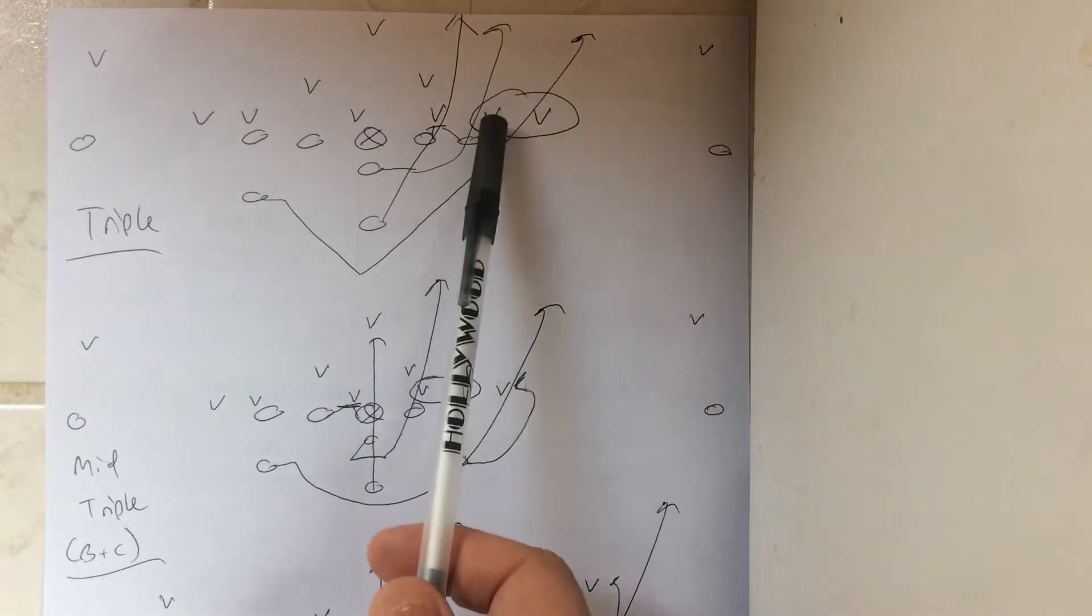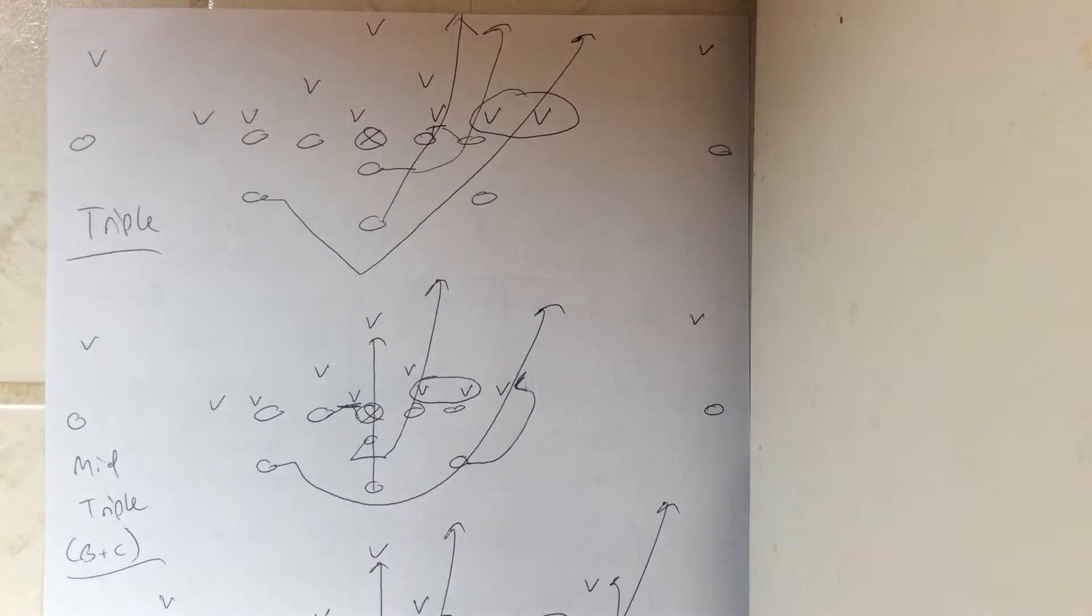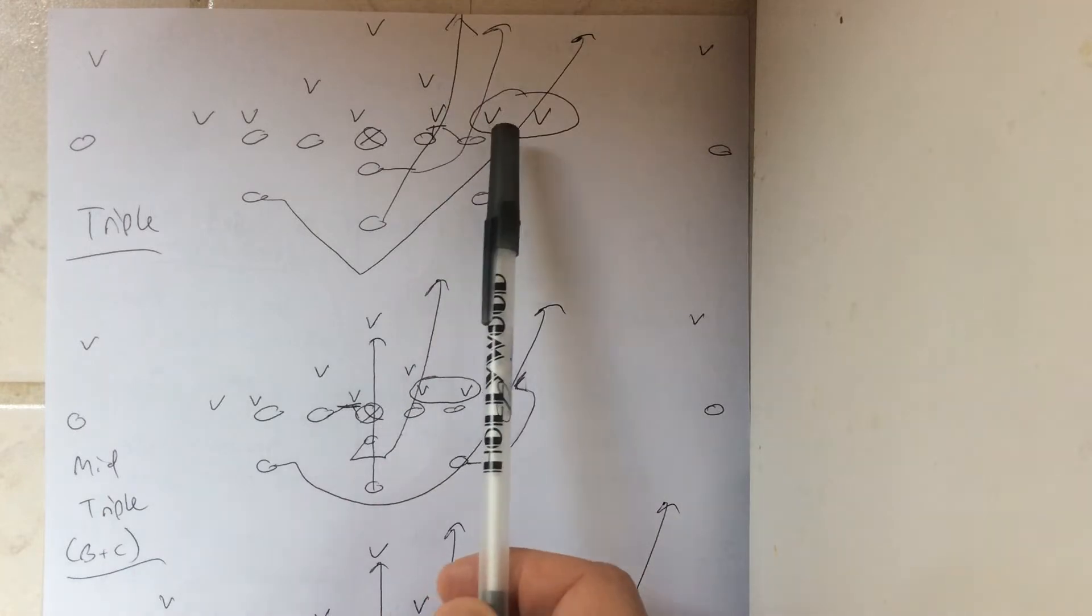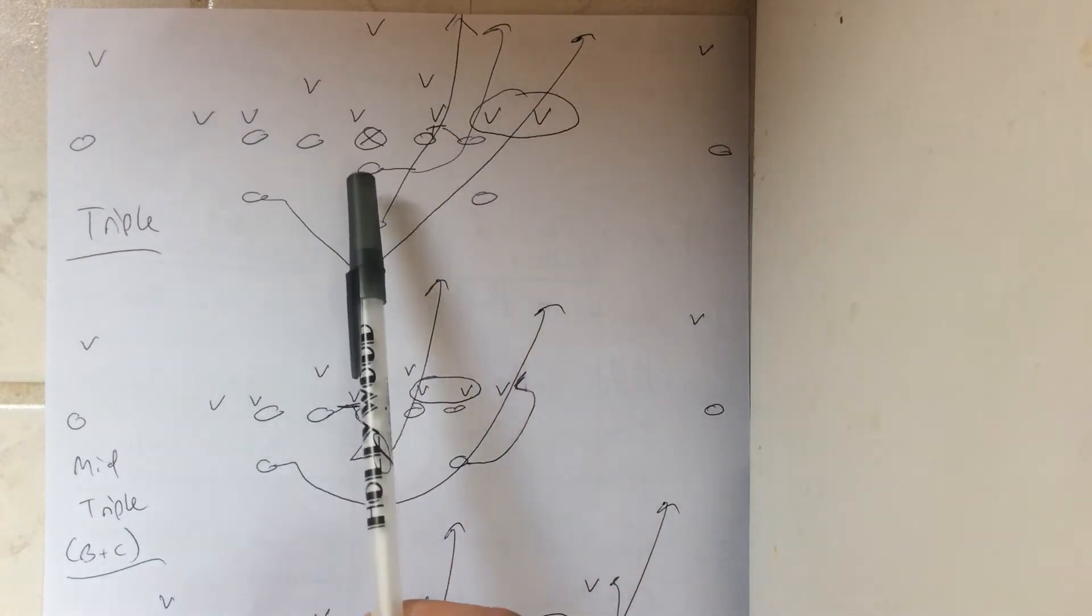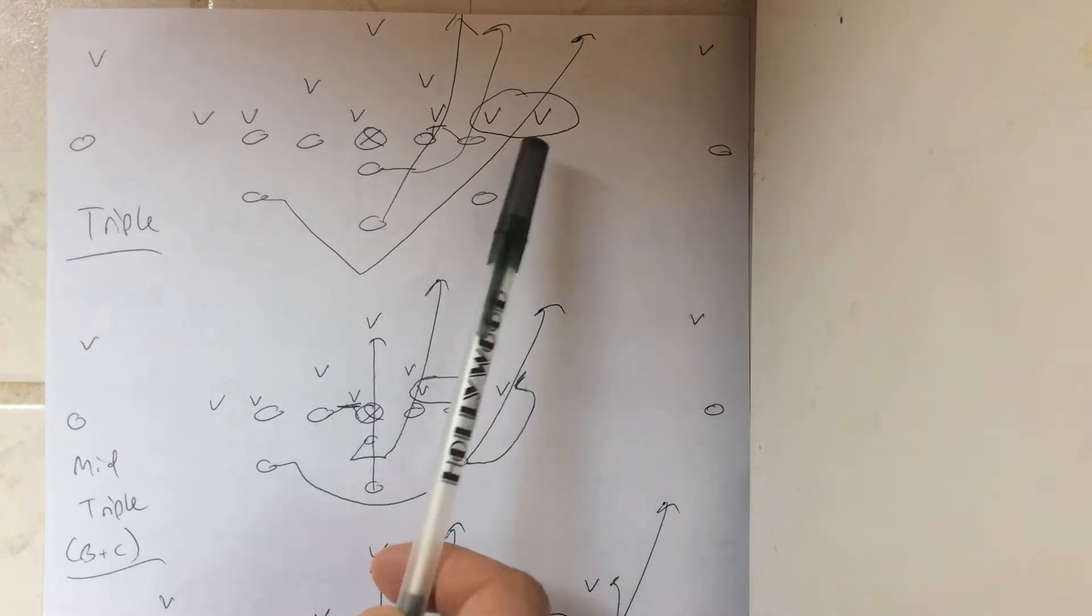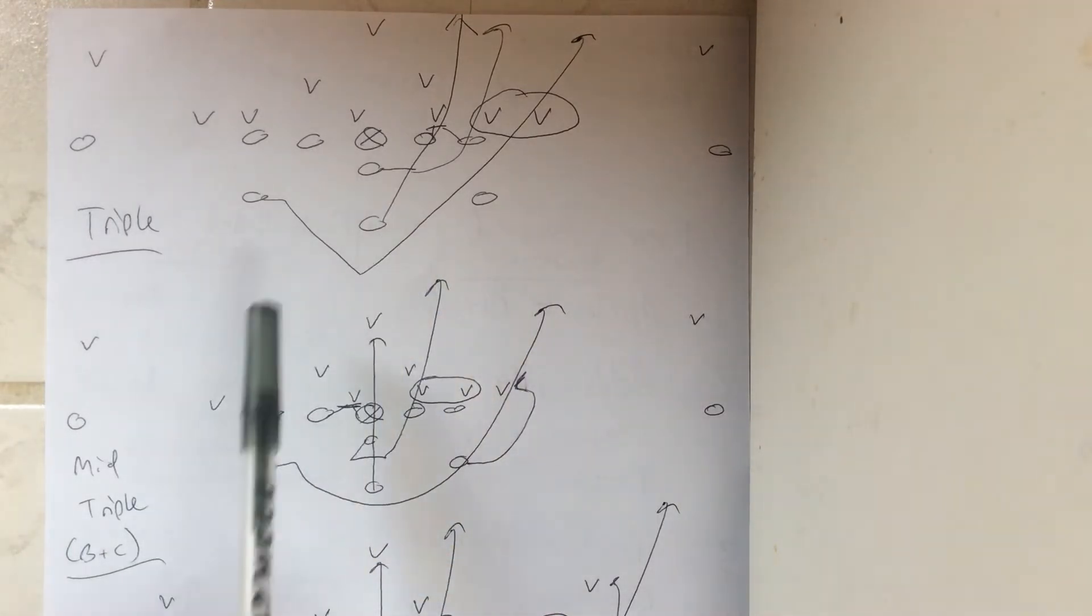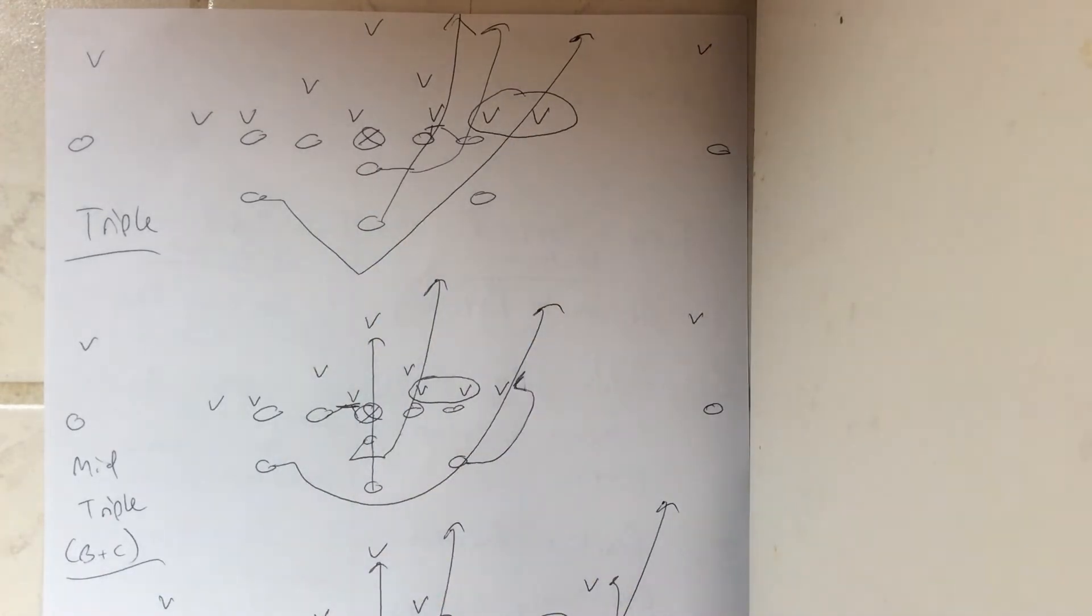You're reading the C-gap defender and the D-gap defender. Basically, it's the B-back's ball, and if the C-gap defender takes the B-back, the quarterback replaces the C-gap defender and scores. And then if the D-gap defender takes him, he stops his feet and flicks the ball to the A-back coming around. The whole goal is to make sure you have a three-on-two versus the C-gap defender and the D-gap defender.